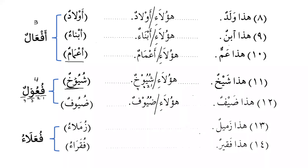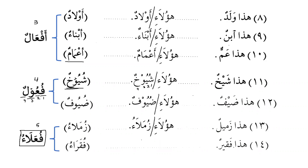Pattern 5 is فُعَلاء, and this is ممنوع من الصرف — it does not accept tanwin and does not accept kasra (it is a diptote). هذا زميل — this is a classmate — becomes هؤلاء زملاء. هذا فقير — this is poor — becomes هؤلاء فقراء. Both زملاء and فقراء are on the pattern فُعَلاء.